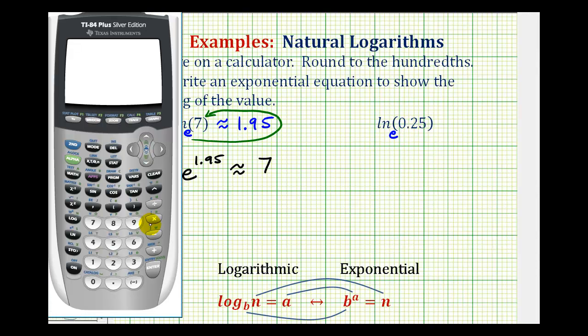For our second logarithm, we'll type in ln 0.25, close parenthesis, enter. And again, rounding to the hundredths, we'd have approximately negative 1.39.